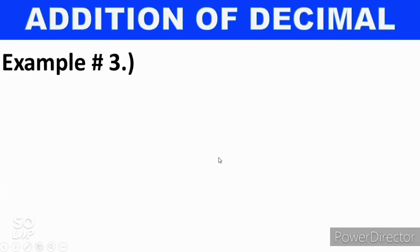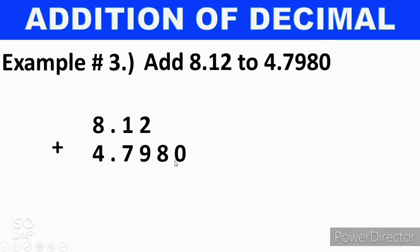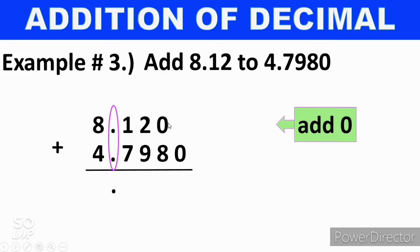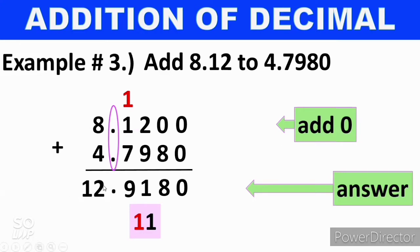Let's proceed to example 3: add 8.12 to 4.7980. We have 8.12 plus 4.7980. Decimal points must be aligned on the same line. Then add 0 — it becomes 8.1200. 0 plus 0 is 0, 0 plus 8 is 8, 2 plus 9 is 11 — write 1 and carry 1. So 1 plus 1 is 2 plus 7 equals 9. And 8 plus 4 equals 12. Therefore, the sum of 8.12 and 4.7980 is 12.9180.